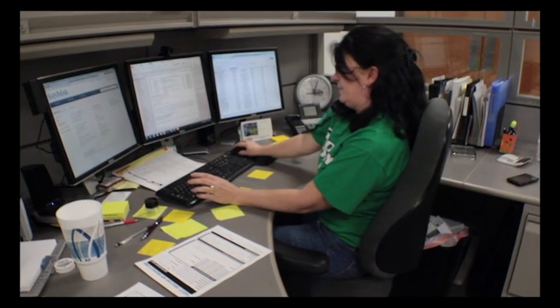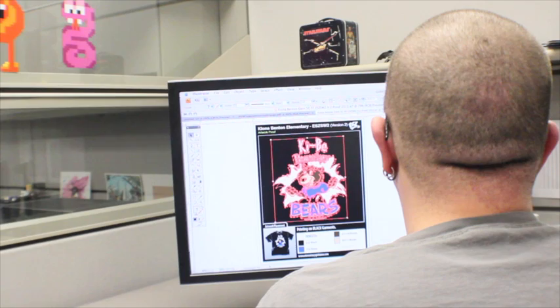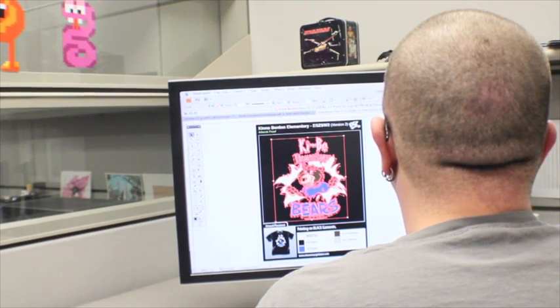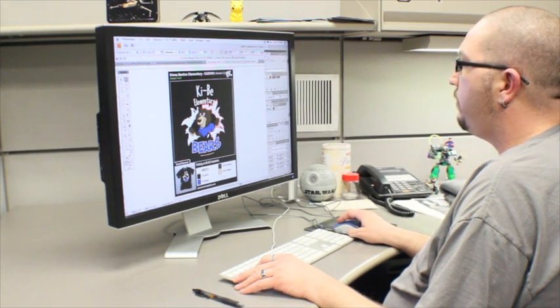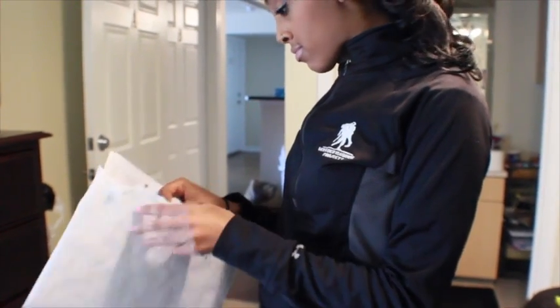After our customer service representatives have received all of your information on what you would like to print, the process moves into the art development phase. Once the design is completed, we send the proof for customer approval. Don't like the initial design? No problem. Simply call us or email us and let us know what needs to be changed. It's as easy as that.